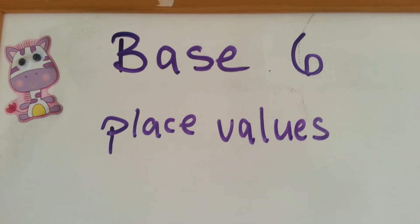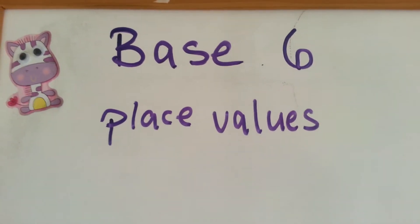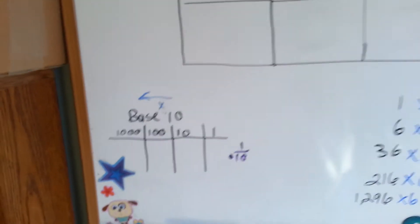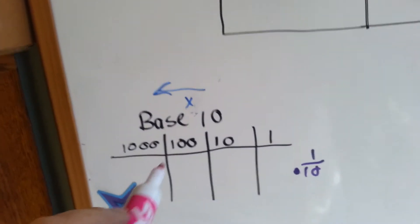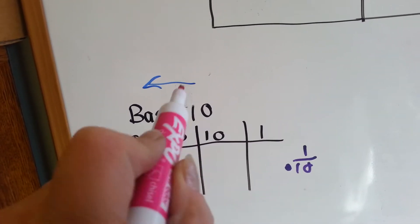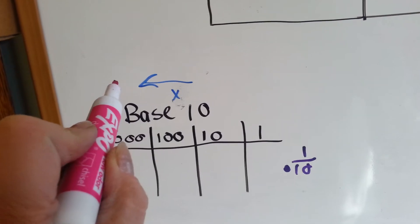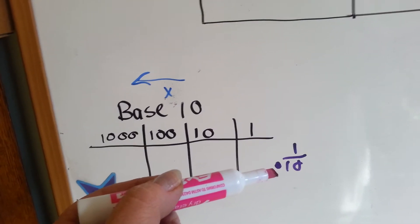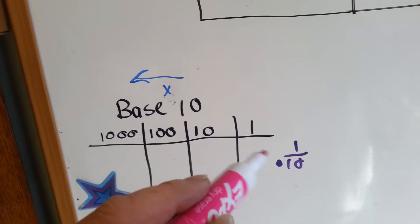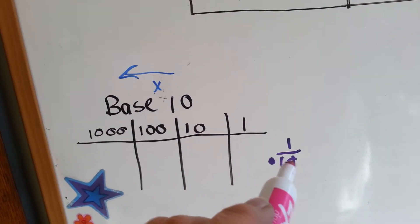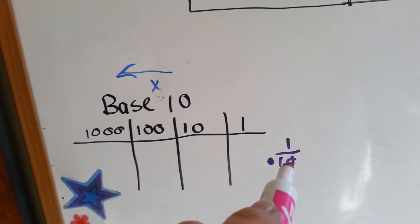Base 6 place values. In our regular place values that we use every day, we use base 10. Base 10 means that as we go to each column to the left, we multiply by 10. To the right, on the other side of the decimal point, we divide by 10. So we go from ones to tenths, because it's split into 10 parts.